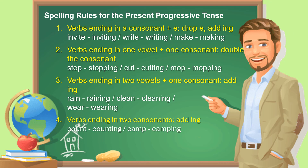Spelling rules for the Present Progressive Tense. Number 1: verbs ending in a consonant with an e — drop the e and add -ing. Invite → inviting. Write → writing. Make → making.